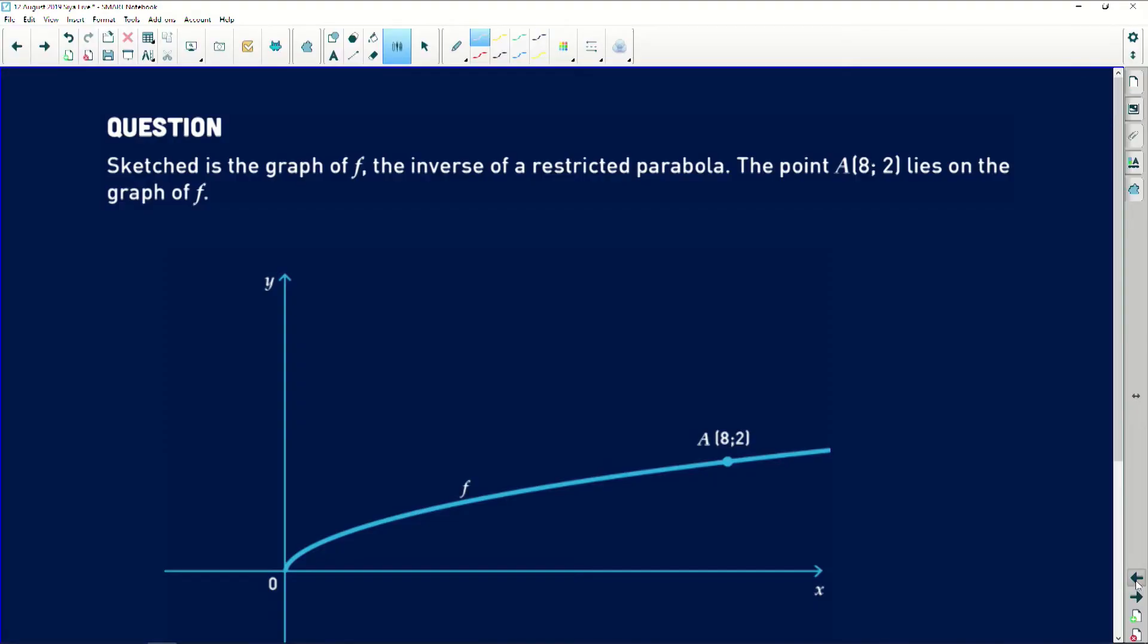But with this one now, we have the turning point form. So the value of p and the value of q is already given to you. So the turning point is already given to you. The only thing you need to know or to do is to find the intercept with the x's and then plot your graph accordingly. So let's have a look at what I have here. So firstly, the things that I said you guys must do is write it in standard form.